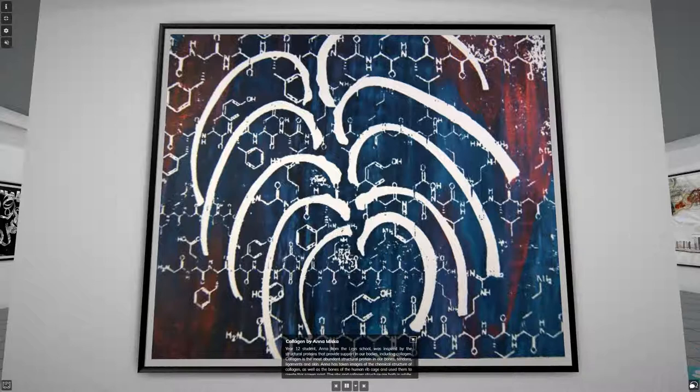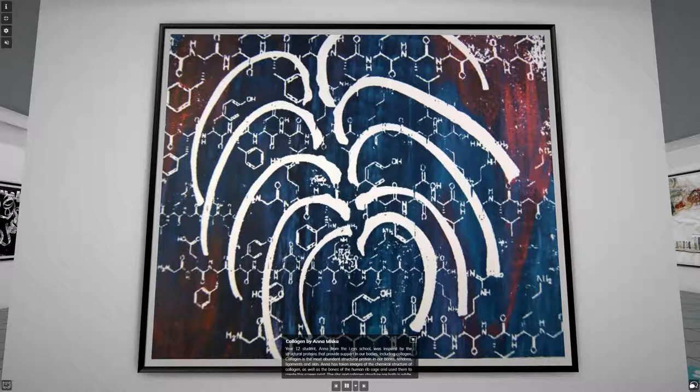Year 12 student Anna from the Lee School was inspired by the structural proteins that provide support in our bodies, including collagen. Collagen is the most abundant structural protein in our bones, tendons, ligaments and skin. Anna has taken images of the chemical structure of collagen, as well as the bones of the human ribcage, and used them to create this screen print. The rib and collagen structure are both in white, mirroring the white bones of the human body, and allowing the images to stand out against the darker colored background.